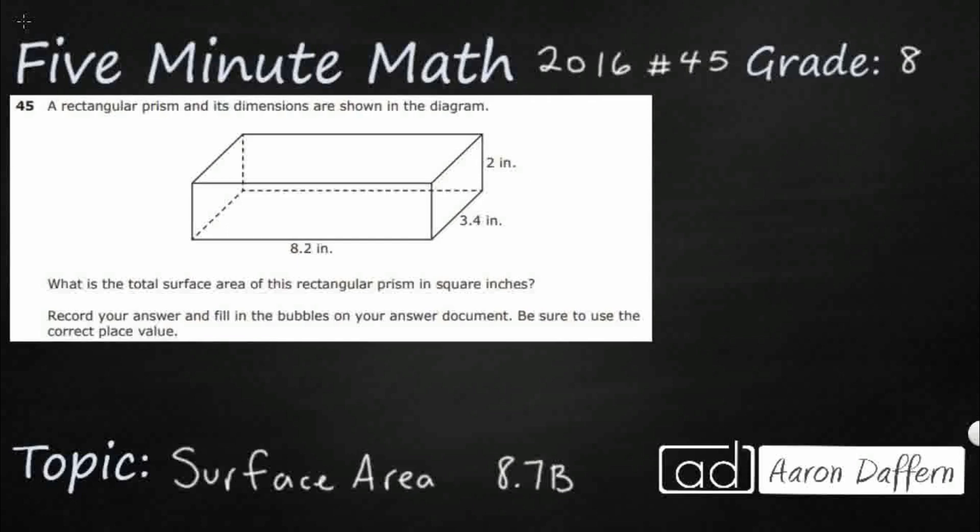We have a very basic rectangular prism here, and we need to find the total surface area in square inches. We have the base and the height, so we've got everything we need. There is going to be no multiple choice to choose from, no A, B, C, or D, so we have to do this calculation very closely.